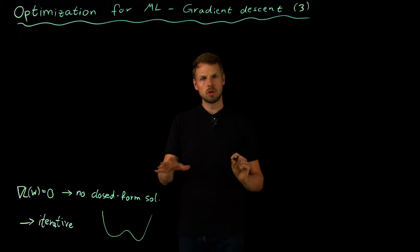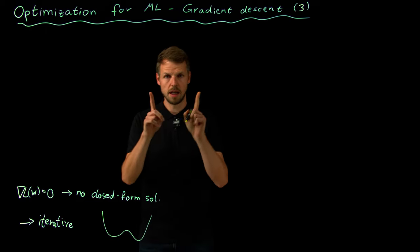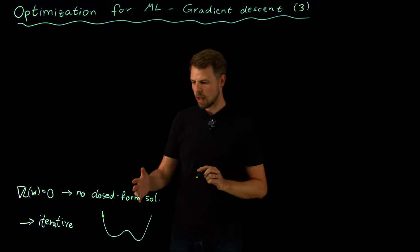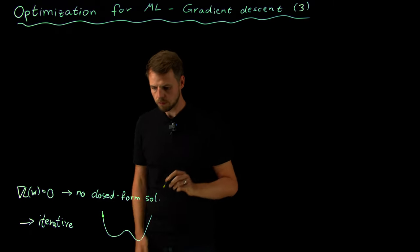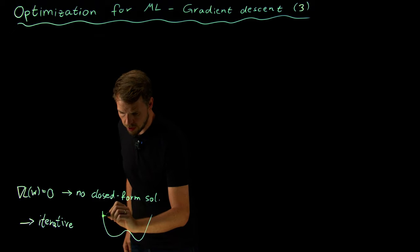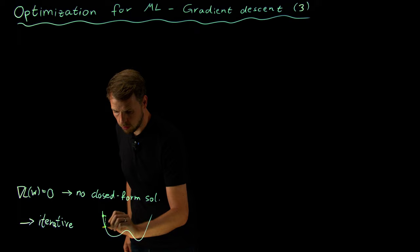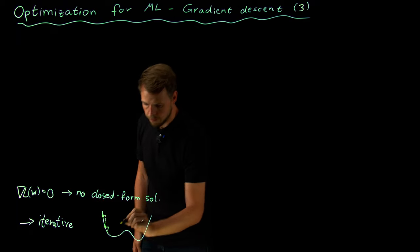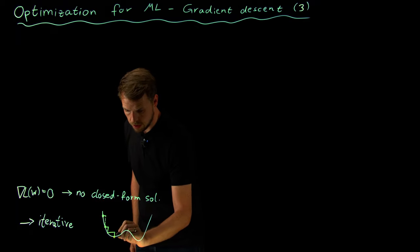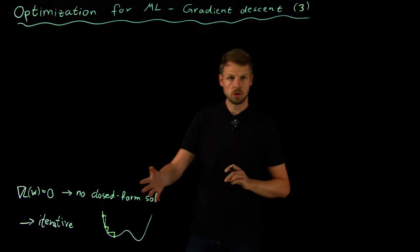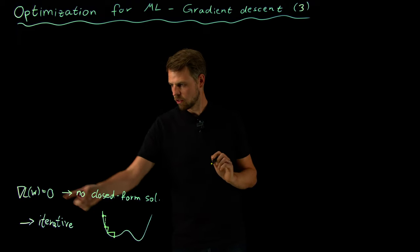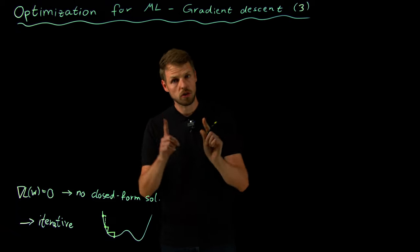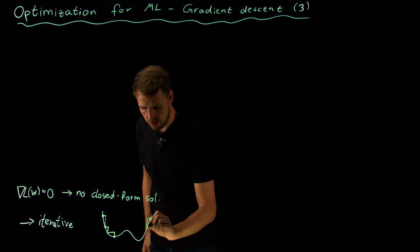Let's consider a function with multiple minima. We want to find one of these minimizers, and importantly, it's going to depend on where we start. We use an iterative procedure to update our weights step by step so that the loss function goes down until we end up in a local minimum.